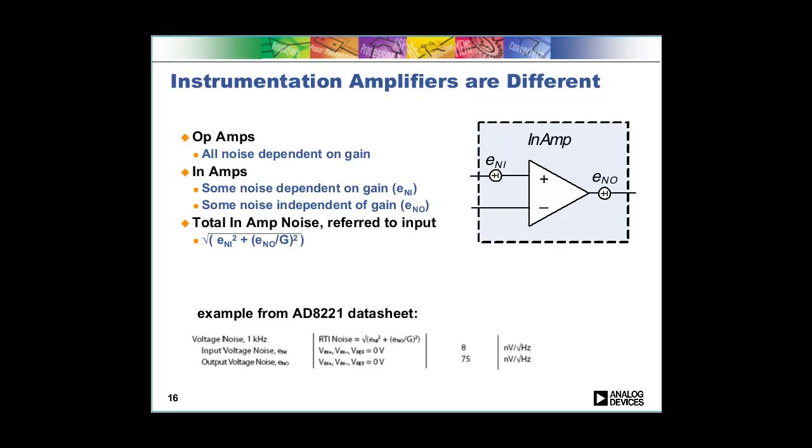I think that confuses some folks. And here I've got a little example from our 8221 data sheet that shows, for example, the ENI or this noise that's dependent on gain is 8 nV/√Hz and the noise that's independent of gain is 75 nV/√Hz. So, for example, in a gain of one, that output noise is going to totally dominate and your noise of your amplifier is going to be very close to 75 nV/√Hz. But if you have a high gain, then that output voltage noise goes away and you're just left with the input voltage noise and it's dominated by that 8 nV/√Hz.